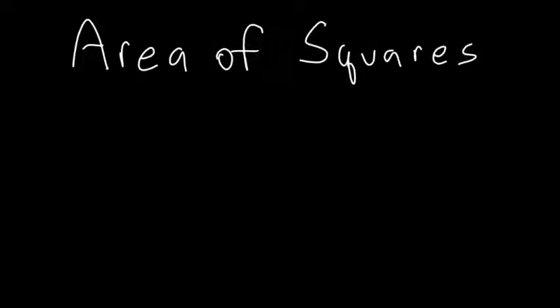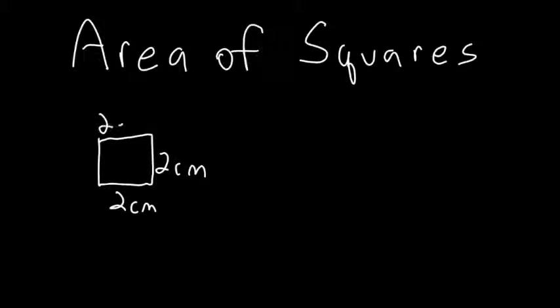Today we're going to talk about area of squares and rectangles. Let's start with some squares, which are just special rectangles. What we know about a square is all the sides are the same, so if this side is 2, this side is 2, this side is 2, and this side is 2.